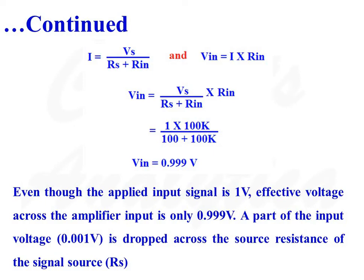In our example, VS is equal to 1V, RIN is equal to 100K ohms, and RS is equal to 100 ohms. We will get VIN is equal to 0.999V, and 1mV (0.001V) is dropped across the source resistance RS. So even though the applied input signal is 1V, the effective voltage across the amplifier input is only 0.999V. A part of the input voltage is dropped across the source resistance RS.